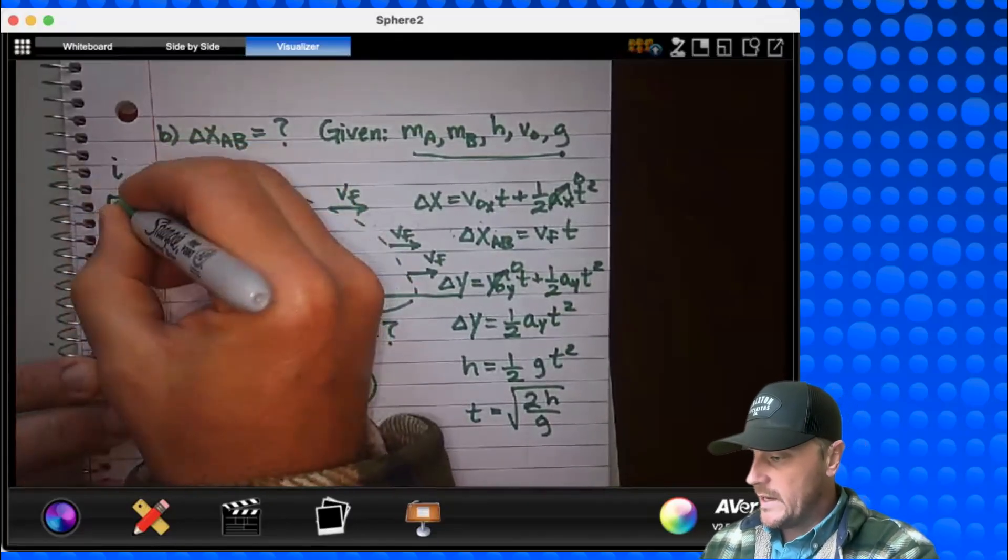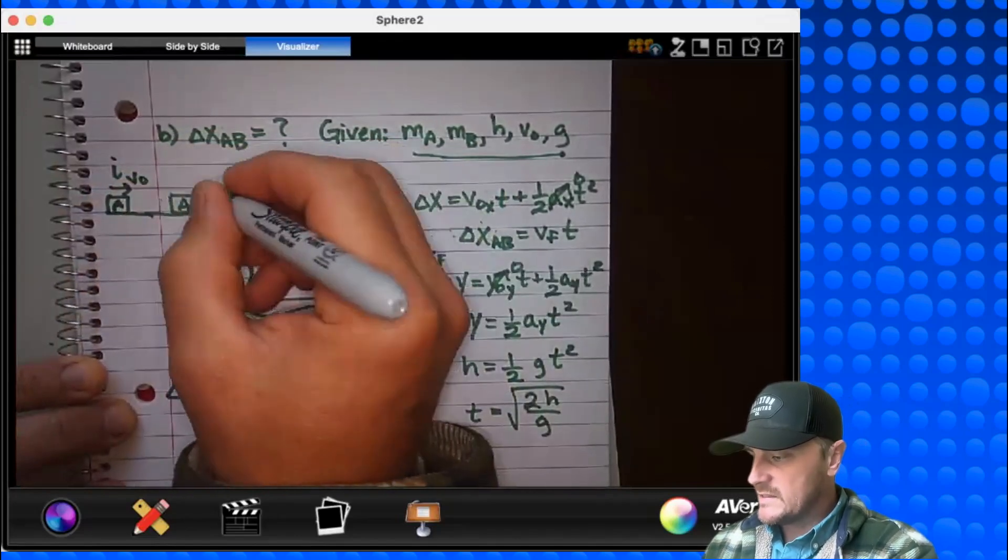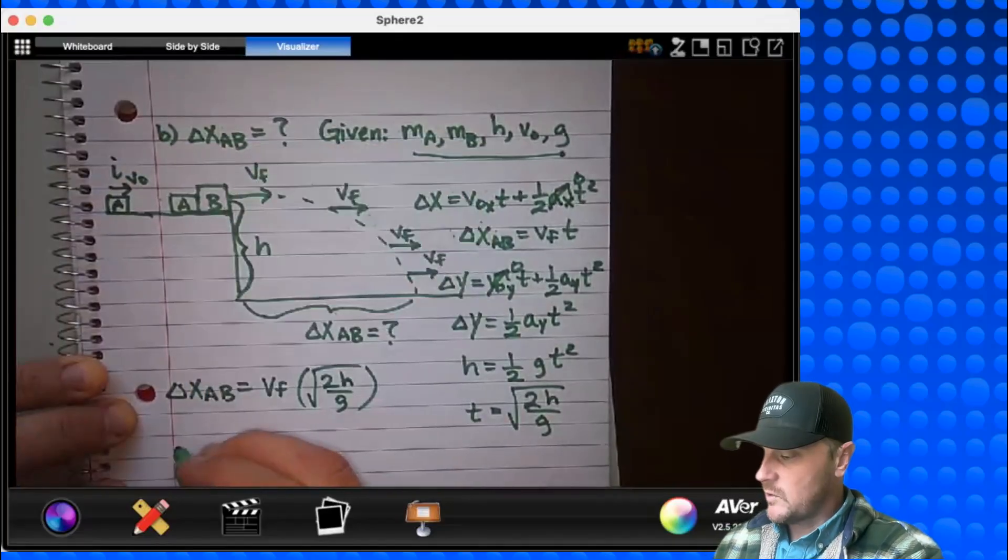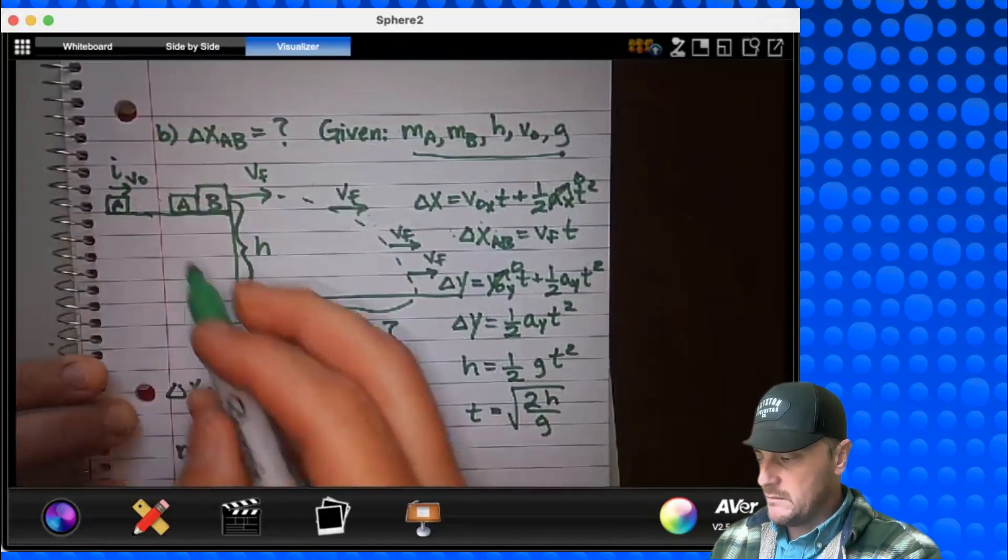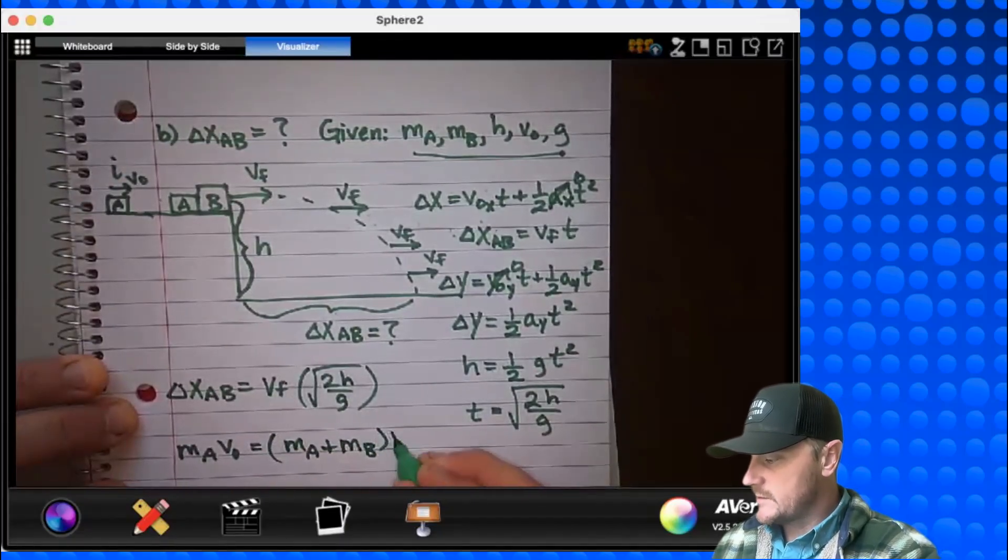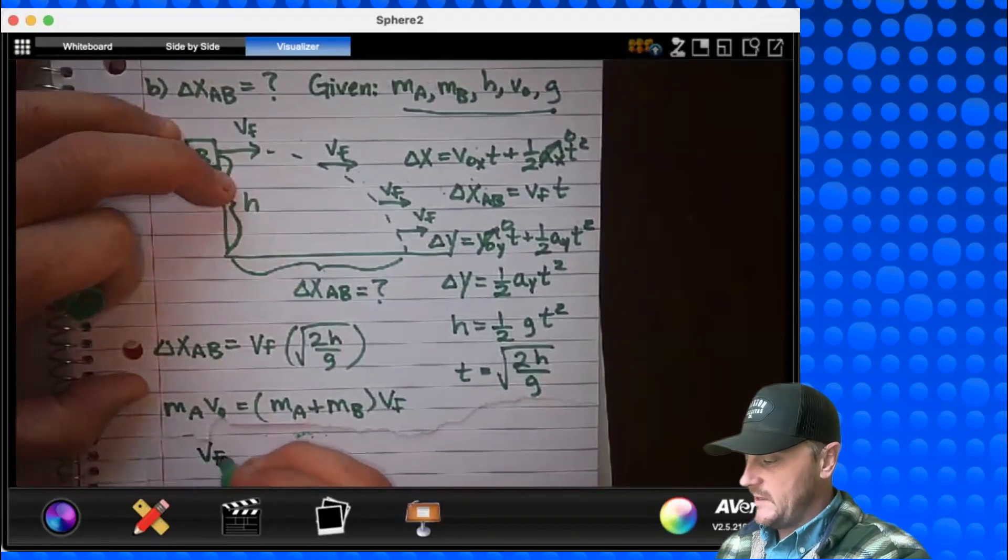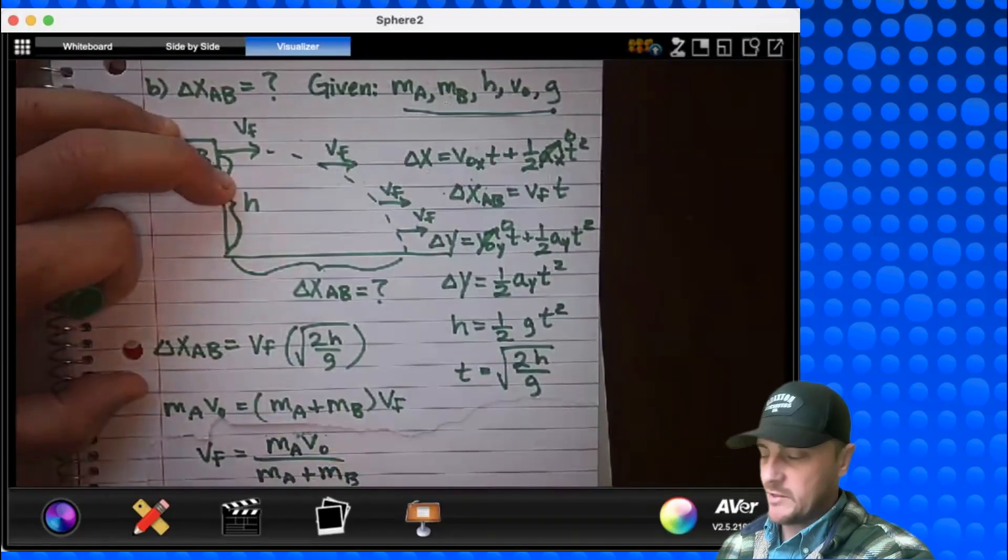Remember, initially we had A here, and it was just moving at a speed V0. Once they stuck together, I'm saying that they have this speed VF. So my total momentum would be MA V0 at the beginning equals MA plus MB times this combination velocity VF. So let's solve for VF. I would get VF equals MA V0 divided by MA plus MB.